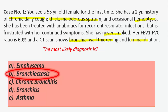For investigations, pulmonary function tests often demonstrate an obstructive pattern but may be normal. On chest X-ray, findings are sometimes non-specific, including increased markings, linear atelectasis, and loss of volume in affected areas. However, more specific findings include tram-tracking — parallel narrow lines radiating from the hilum — or honeycomb-like structures.